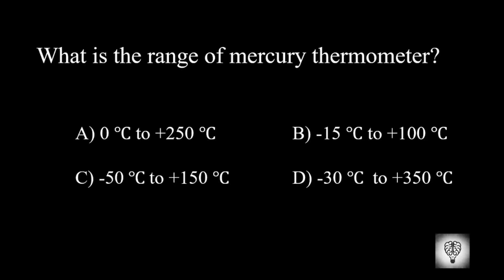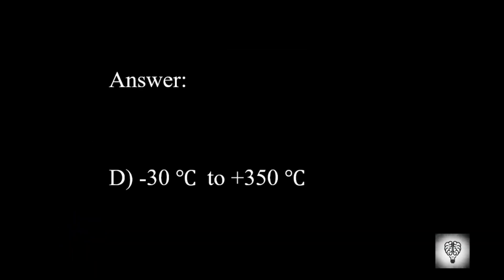What is the range of mercury thermometer? Correct answer is minus 30 degrees Celsius to plus 350 degrees Celsius.